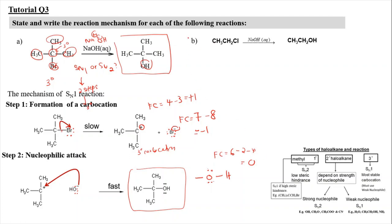For the next reaction, part B, we use the same method — identify the class of the haloalkane. Expanding the structure, the carbon attached to the halogen (Cl) is attached to one alkyl group, making it a primary haloalkane. For a primary haloalkane, it will undergo SN2 when there is low steric hindrance. Here the steric hindrance is very low because it only consists of a small alkyl group.